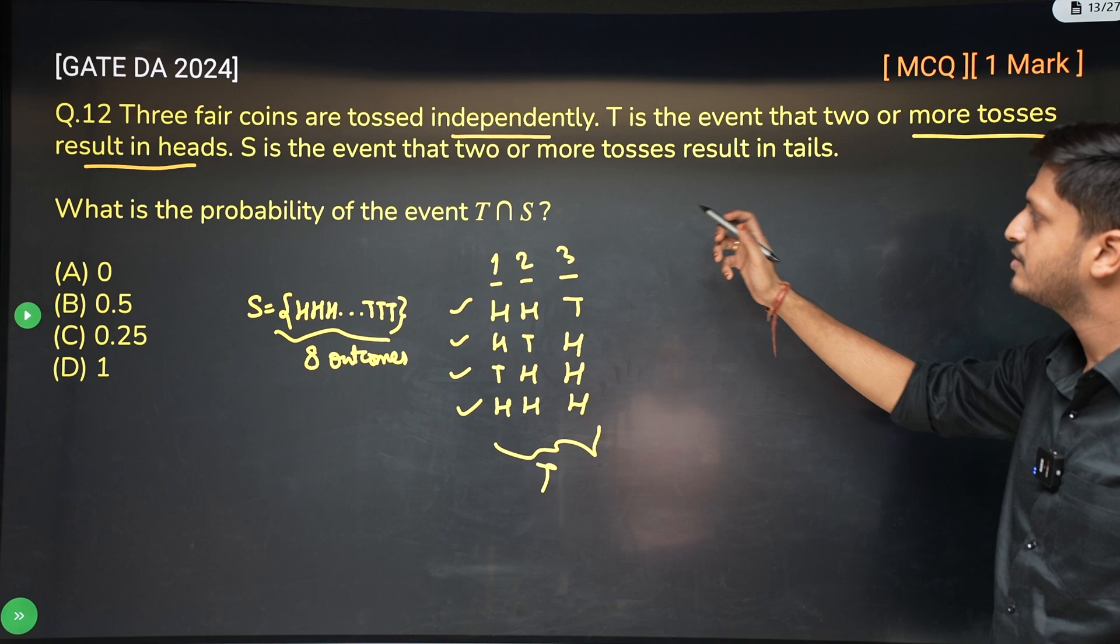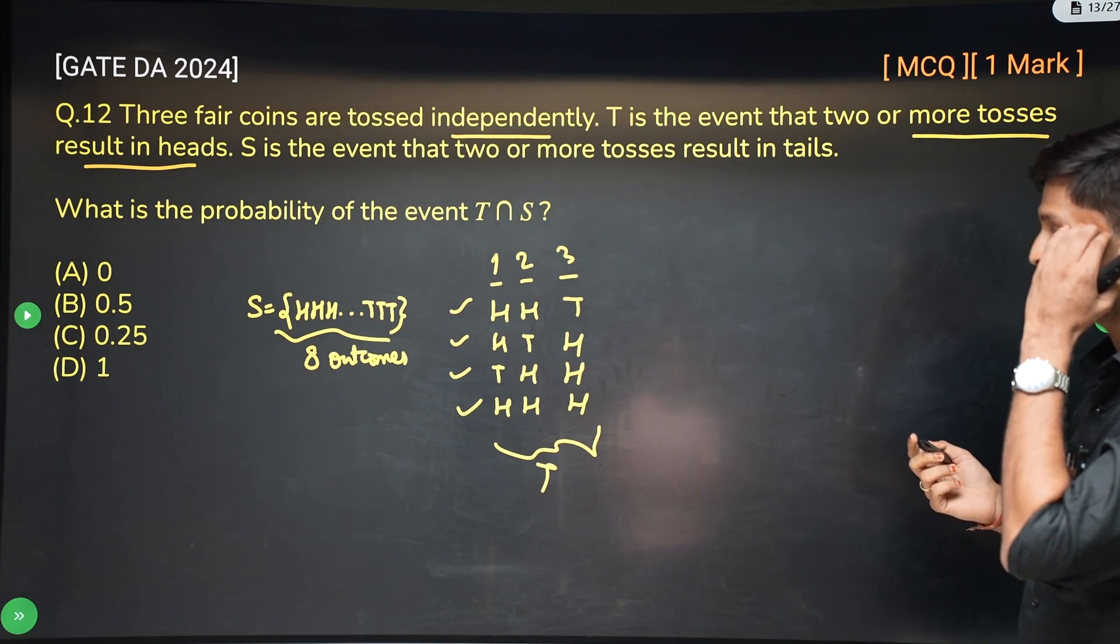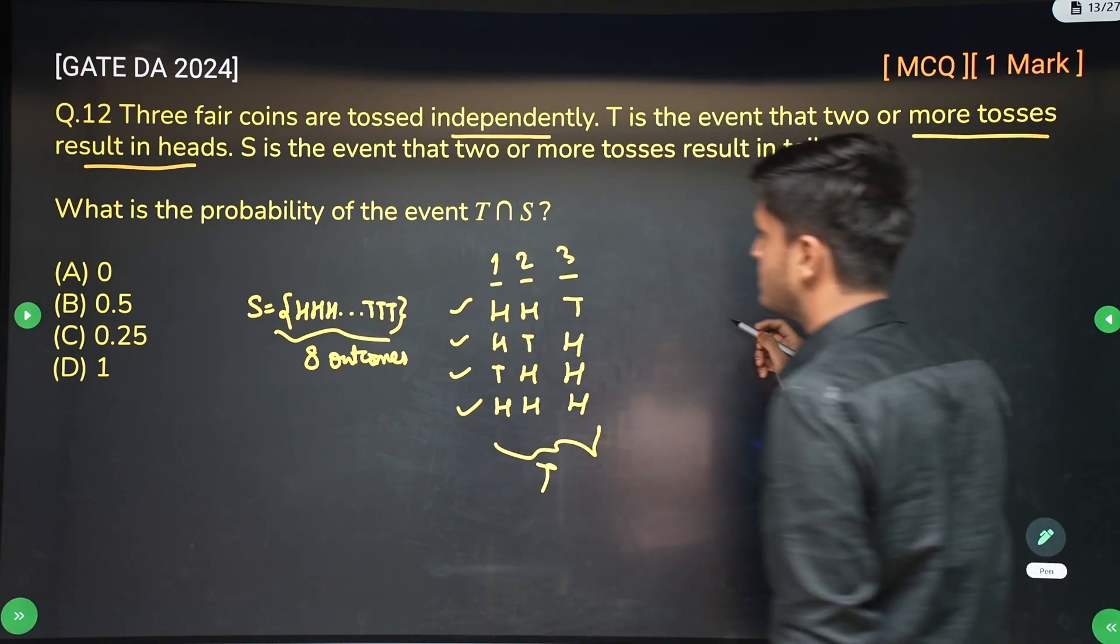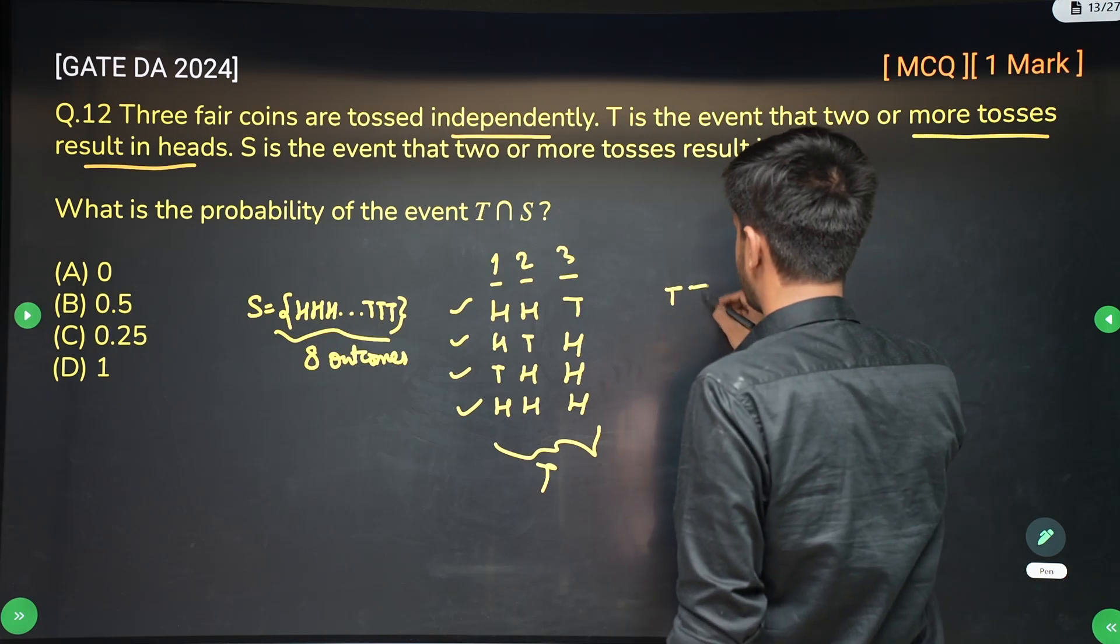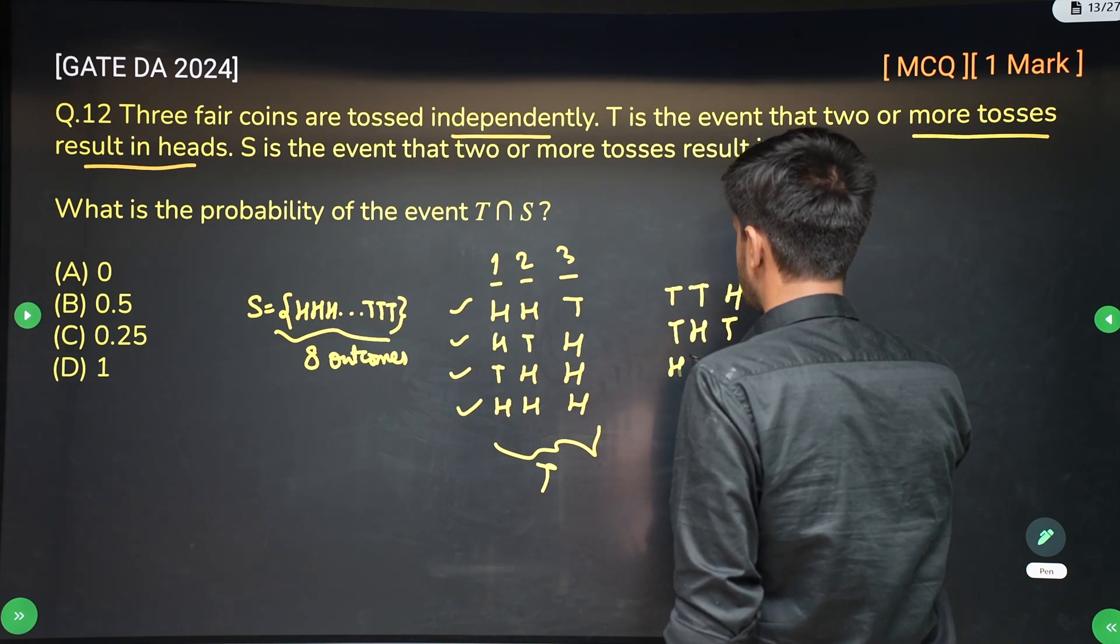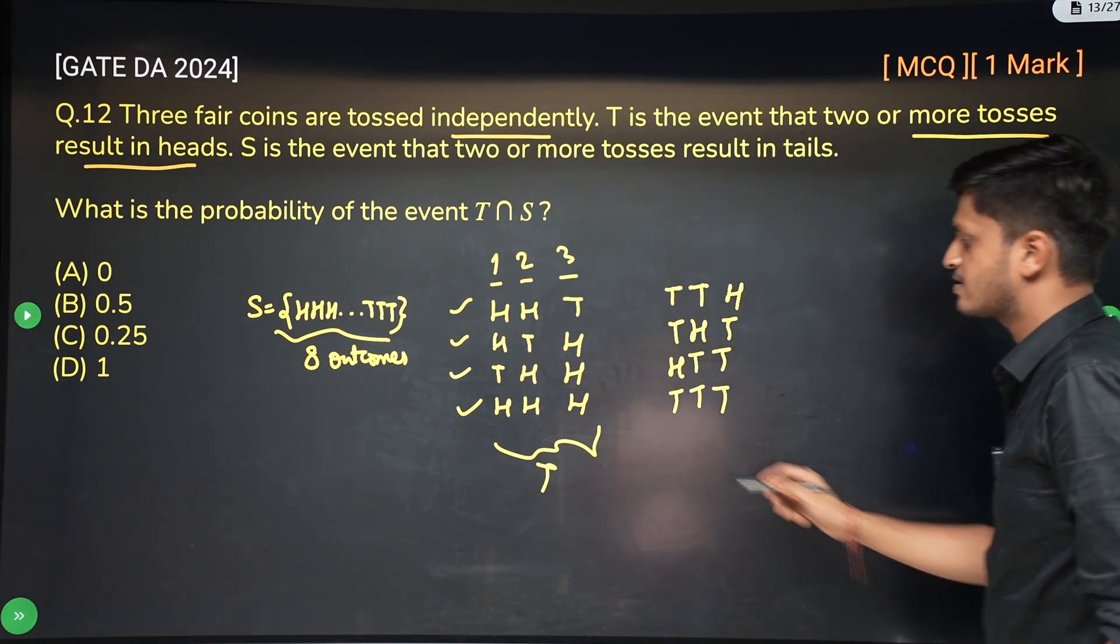S is the event that two or more tosses result in tails. So the event S is given as you should have at least two or more tails. So S is like tails-tails-heads or tails-heads-tails or heads-tails-tails or tails-tails-tails. This is S.